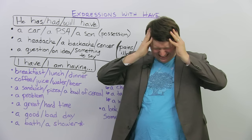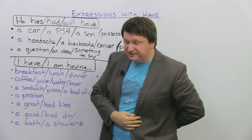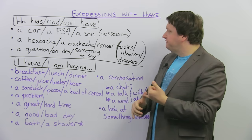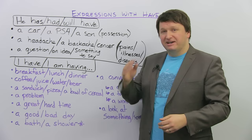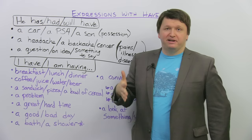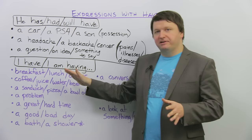Next, I have a headache, or I have a backache, or he has cancer. So, if you are talking about a pain or an illness or a disease, you can also use the verb have. I have a headache, I have a backache, I have an earache, and a wide variety of pains that you have on your body.